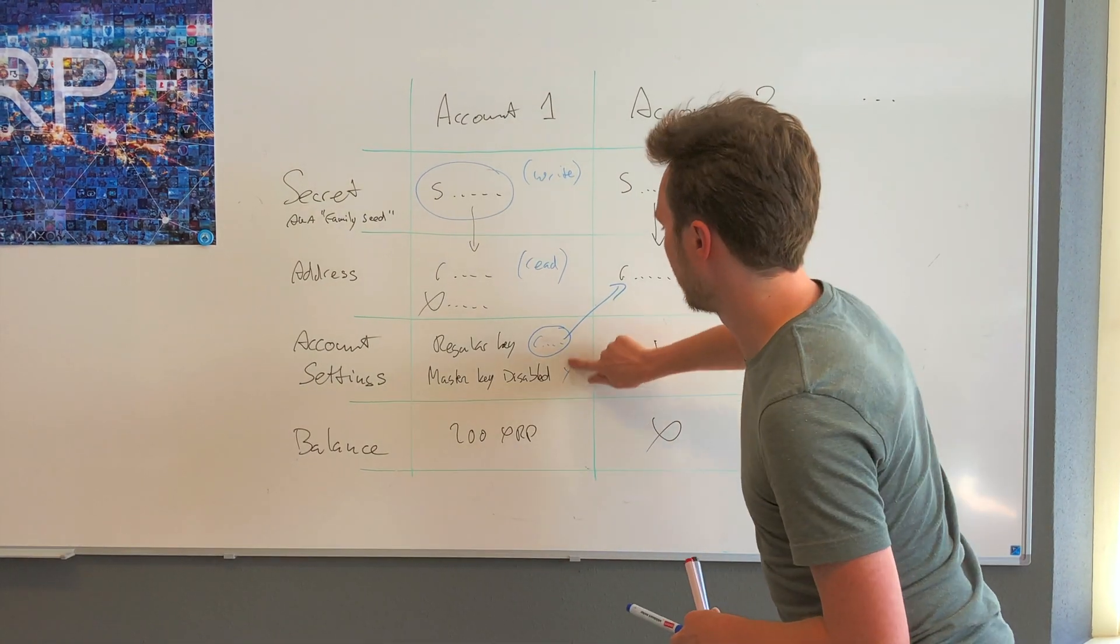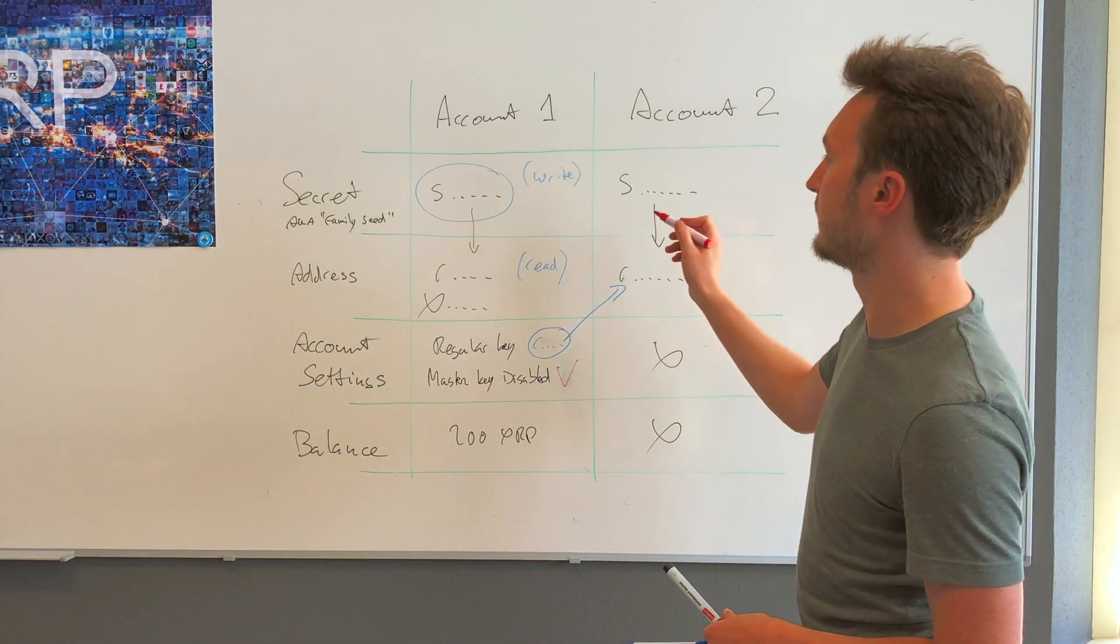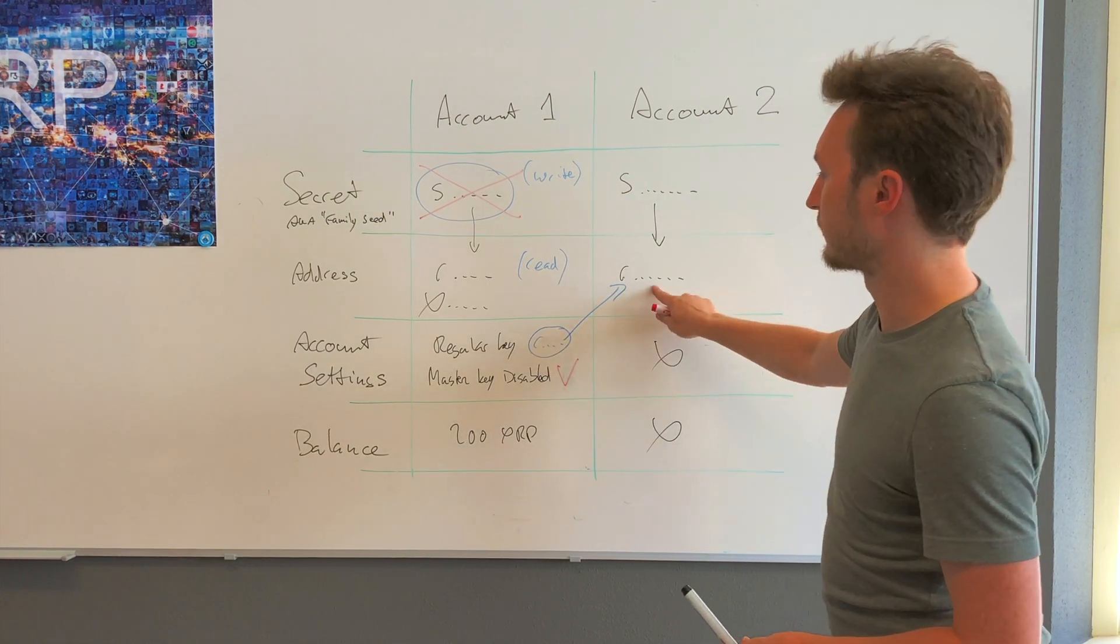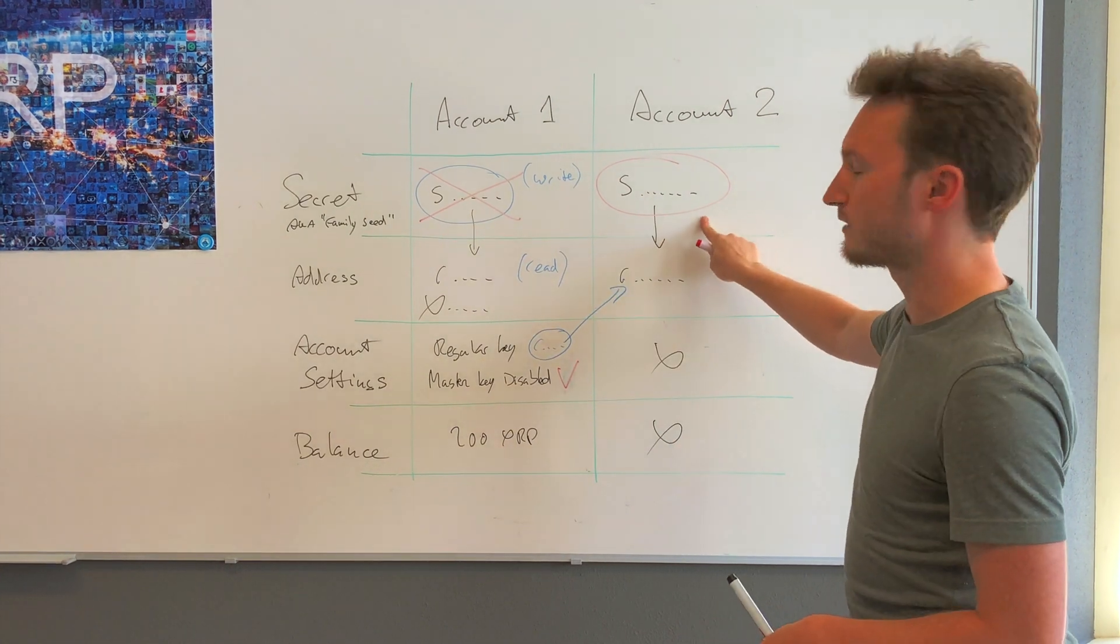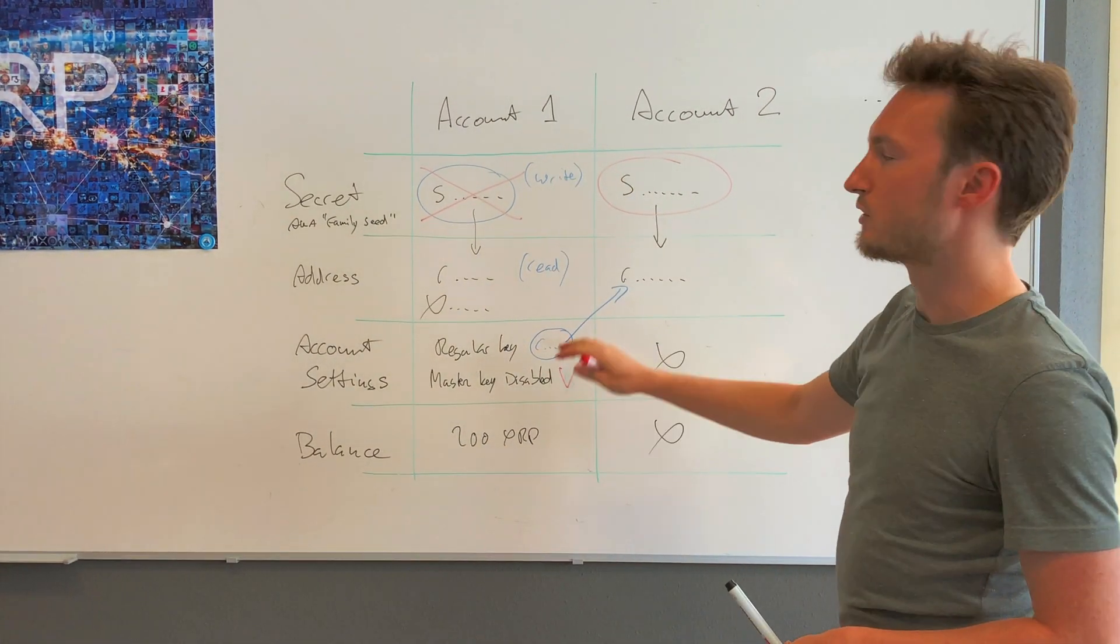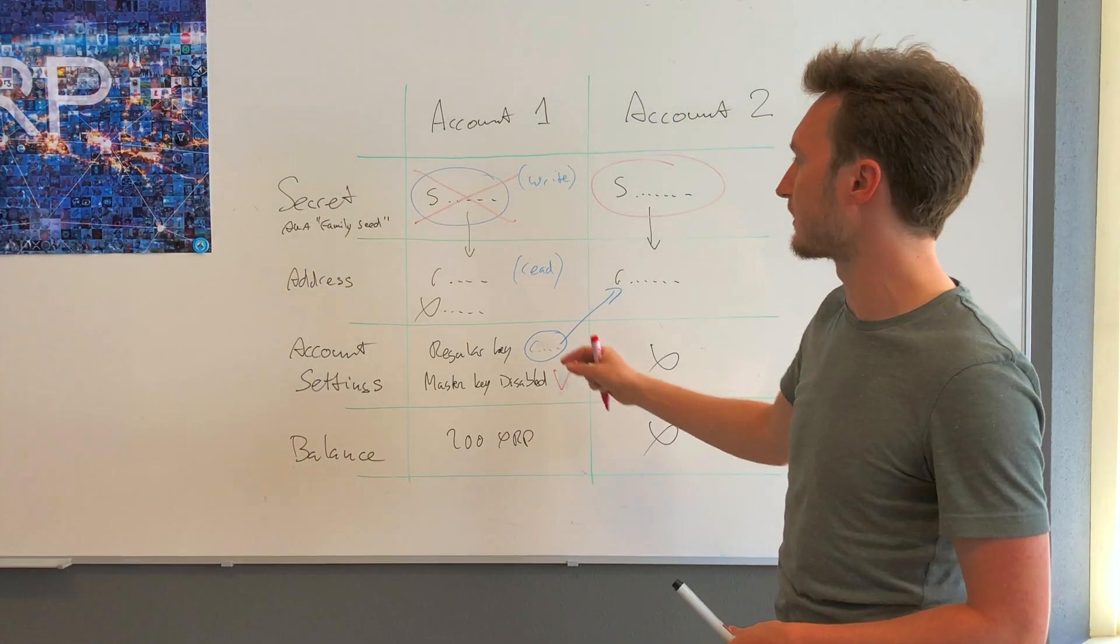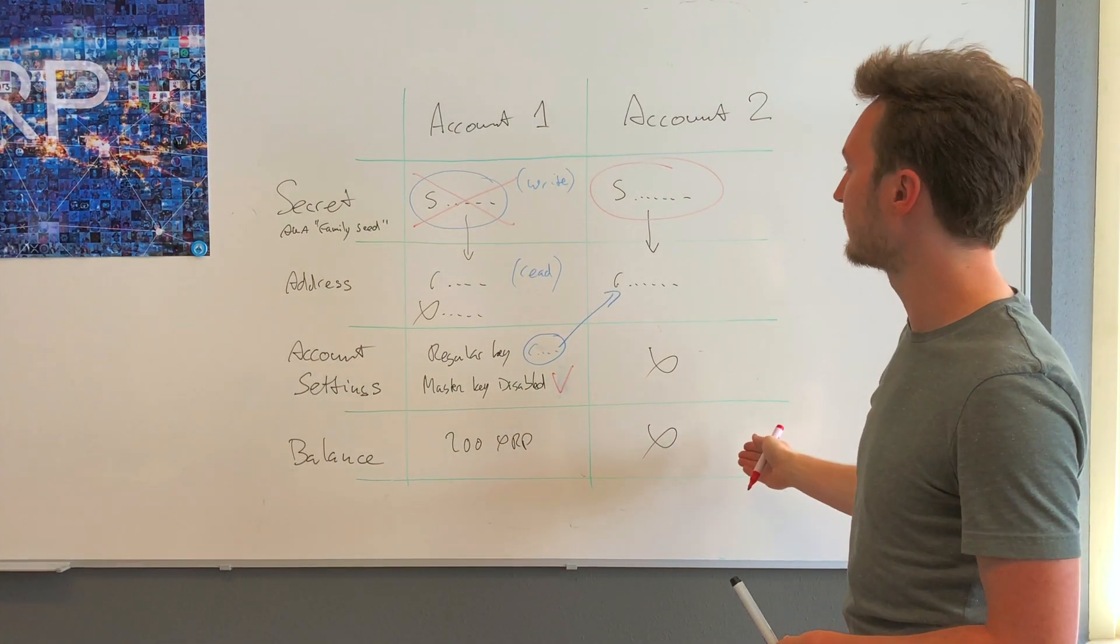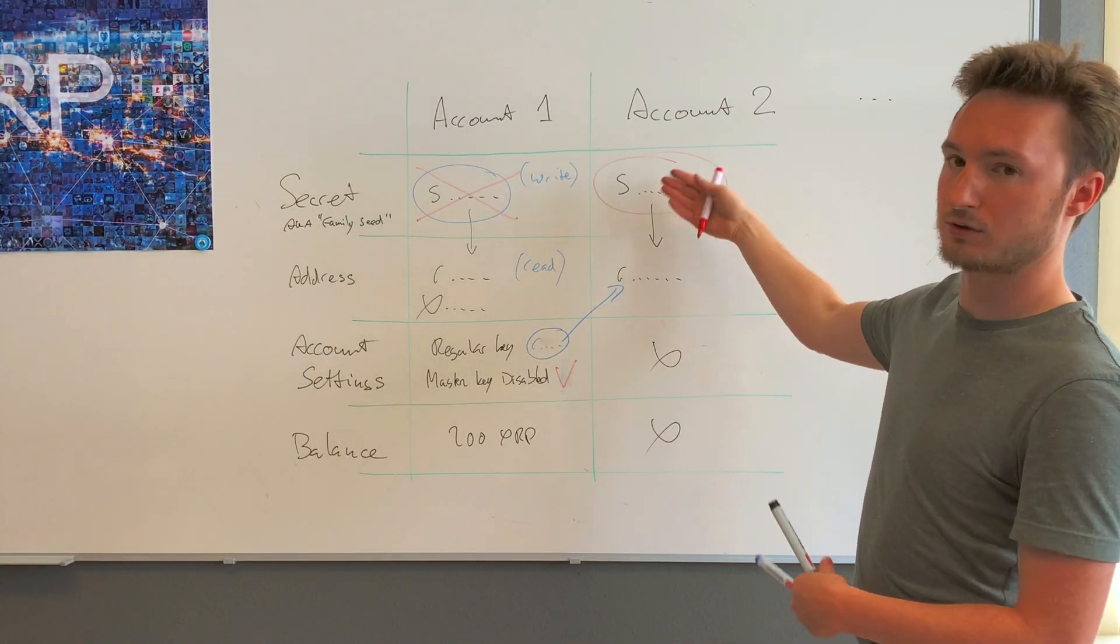What we can do then is disable the master key of this account, which would mean this one becomes completely useless. Because this account is configured as a regular key, this is going to be the secret we can use to sign for transactions on this account. So a regular key is not a new secret for your one account. A regular key is actually another account that can even be unactivated, which is configured as the new key—a new account, new key—for your existing account.